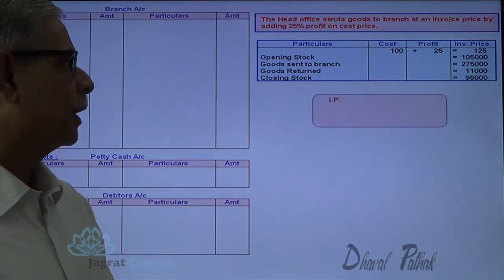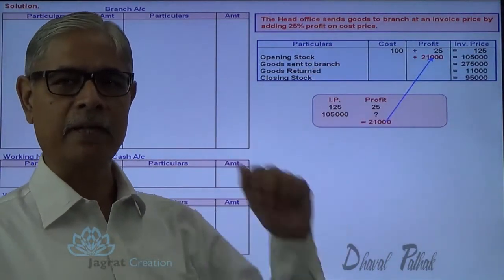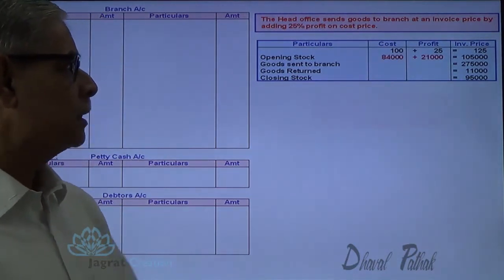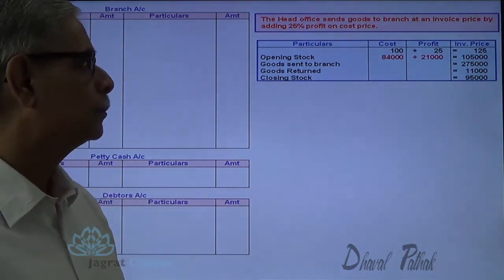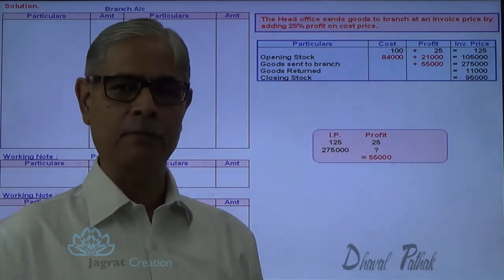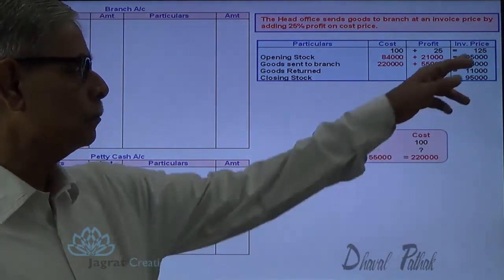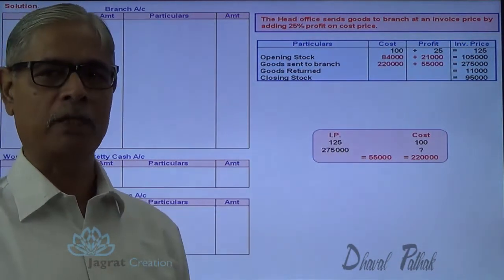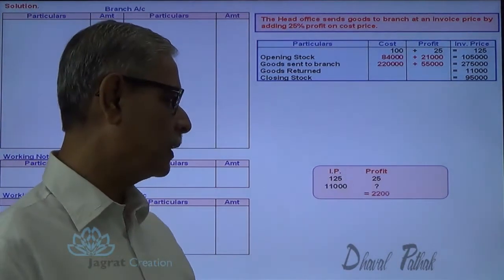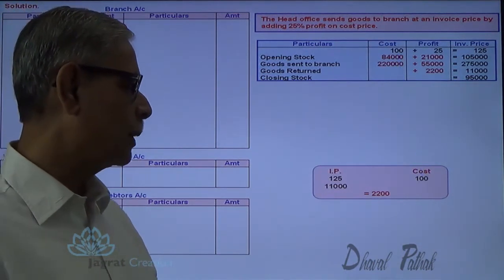Let me work it out. If invoice price is 1,05,000 — one-fifth of 1,05,000 is 21,000 profit element, so cost element is 84,000. Similarly, goods sent at 2,75,000 — one-fifth profit element is 55,000, and cost element is 2,20,000 (i.e., 2,75,000 minus 55,000). Goods returned: 11,000 — one-fifth is 2,200 profit element, and cost element is 8,800 (125 is to 100, so 11,000 gives 8,800 cost).